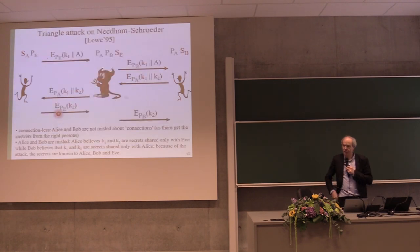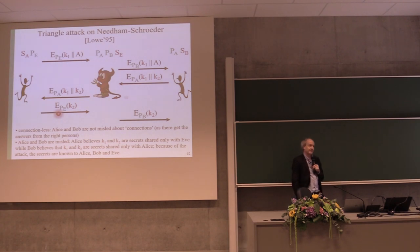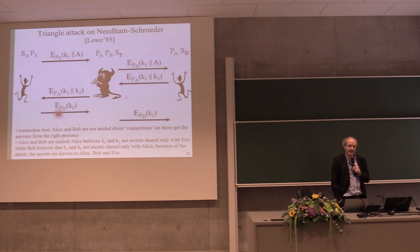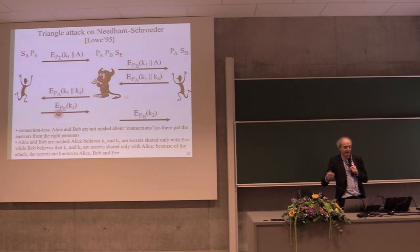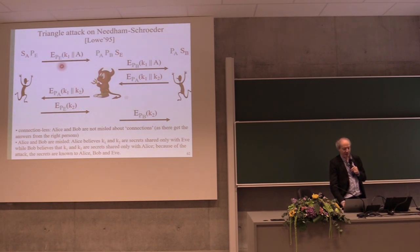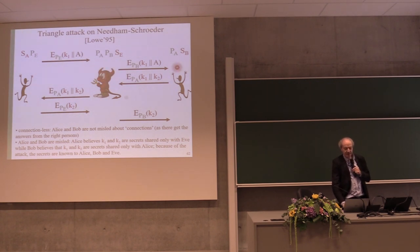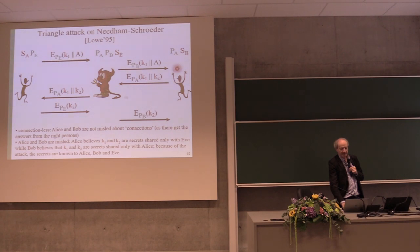This was a textbook example of how to do protocols. Then in 1995 — after 17 years — somebody found an attack. Eve sits in the middle: she doesn't know the key, but she reflects the challenge. Alice encrypts K1 with Eve's public key; Eve decrypts, re-encrypts with Bob's public key and tells Bob she wants to talk to him. Bob follows the protocol but believes Alice wants to talk to him, because Eve put Alice's name there.